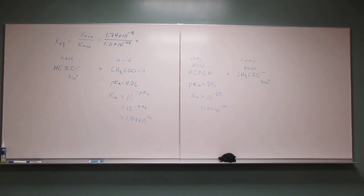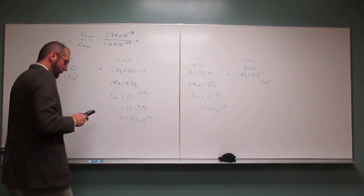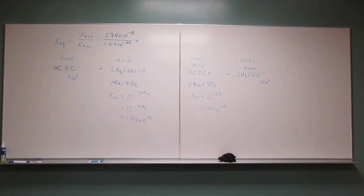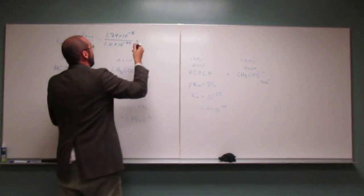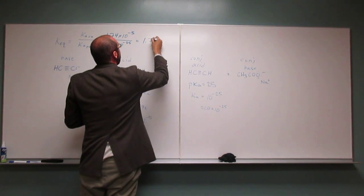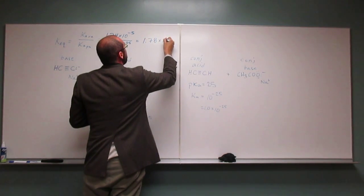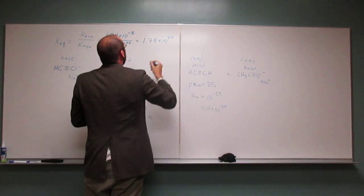So I'll get my calculator out, put some things in here. So when I do that, I get—so it should be a big number, right? 1.78 times 10 to the 20th.